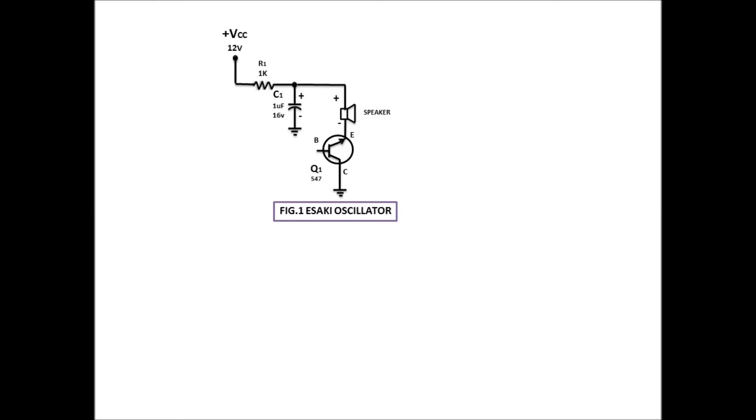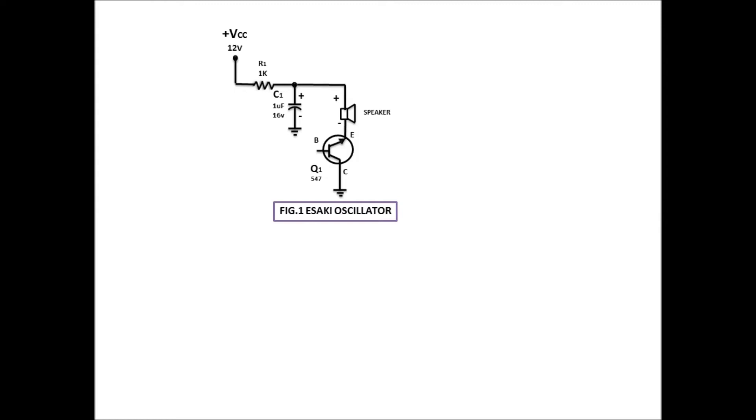Sa pagtawid ng kuryente sa emitter to collector. Bakit tumatawid dyan? Dahil yung electron umaakyat galing ground collector papuntang emitter. Pag umakyat ang electron dyan, ang kuryente naman emitter to collector. Yung yung conventional current flow. Diba? Medyo complicated. Pero, tingnan natin. Ayan. Nung ikabit natin yung 12 volts, fix yung voltage supply natin. Kasi yung stable voltage. Para sa Isaki oscillator. 12 volts.